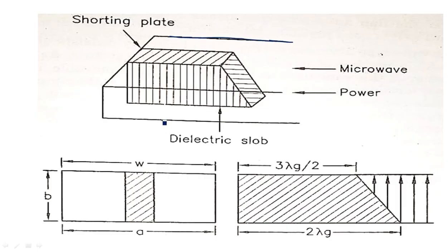Let us see how these fixed attenuators are constructed. This is a rectangular waveguide, inside which the shaded part is a shorting plate. The device is a dielectric material coated with a carbon film. When the power enters through this, it is simply reduced or nullified. It is like a match termination because it is connected at the end with a shorting plate — it is completely closed, meaning it terminates the entire power.